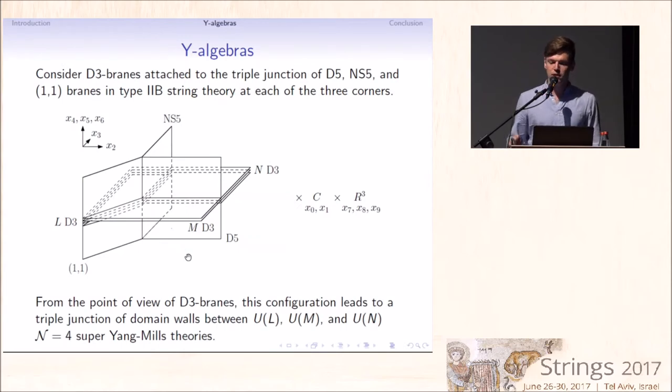We have considered the following brane setup. Let us consider trivalent junction of D5 branes and NS5 branes and 1,1 branes in type 2B string theory. Let us attach L, M, and N D3 branes to each of the three corners. From the point of view of the theory on D3 branes, this configuration gives rise to triple junction of domain walls between U(L), U(M), and U(N) N equals 4 super Yang-Mills theories.